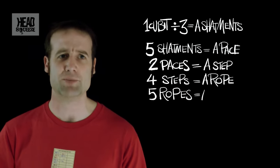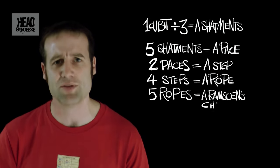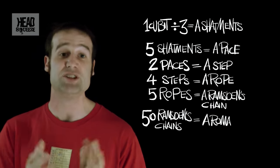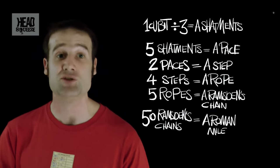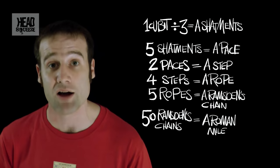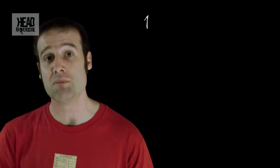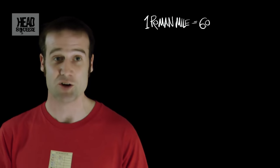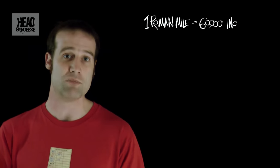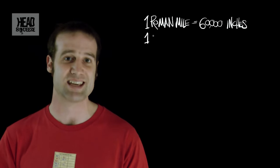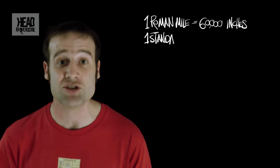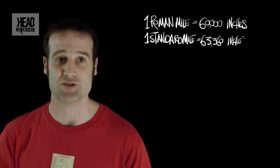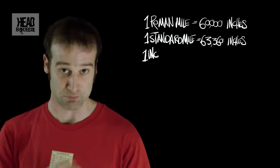If you take four Steps, you get a Rope. If you take five Ropes, you get a Ramsons Chain. If you take 50 Ramsons Chains, you get a Roman Mile. The Roman Mile, of course, wildly different from the Standard Mile.